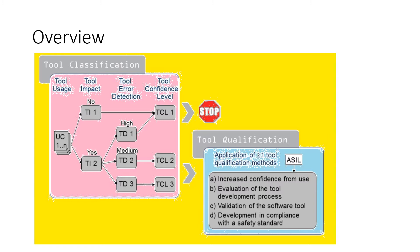As a first step, you have to write all the use cases of the tool. Each tool might have one to N use cases. The second step involves tool impact — you have to identify the impact of the tool. If the tool doesn't have any impact on the software you are developing, it is categorized as TI1.